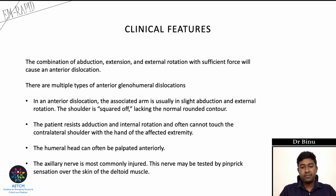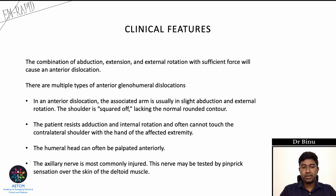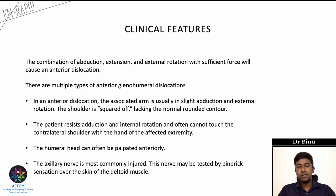In anterior glenohumeral dislocation the arm is usually in slight abduction with external rotation and the shoulder is squared off, lacking its normal rounded contour. The patient resists any adduction and internal rotation and often cannot touch the contralateral shoulder with the hand of the affected extremity. The axillary nerve is the most commonly injured nerve, tested by pinprick sensation over the skin of the lateral arm.